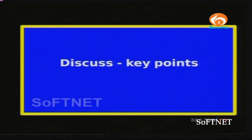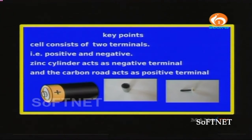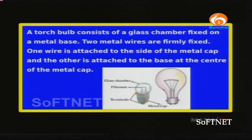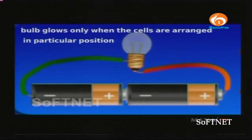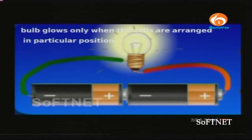Key points: A cell consists of two terminals — positive and negative. Zinc cylinder acts as the negative terminal and the carbon rod acts as the positive terminal. A torch bulb consists of a glass chamber fixed on a metal base with two metal wires firmly fixed — one attached to the side of the metal cap and the other to the base of the metal cap. A torchlight consists of a metal spring, glass seal, halo cylindrical barrier, switch, cells, and a bulb. The bulb glows only when the cells are arranged in a particular position — positive terminal of one cell next to the negative terminal of the other.